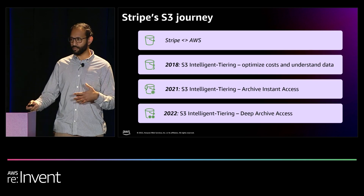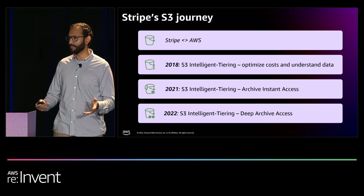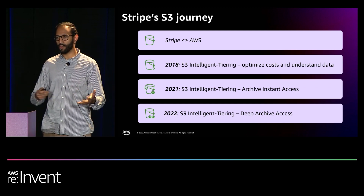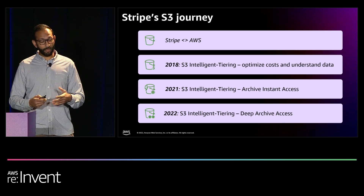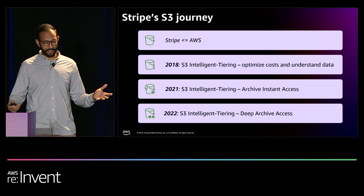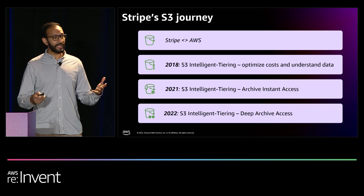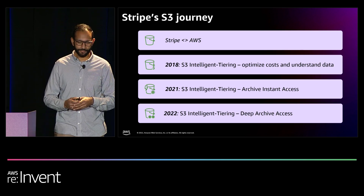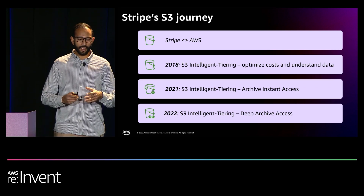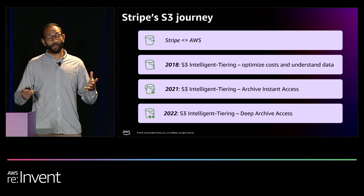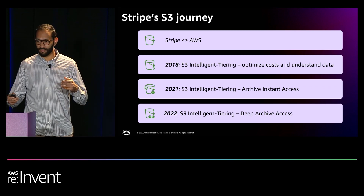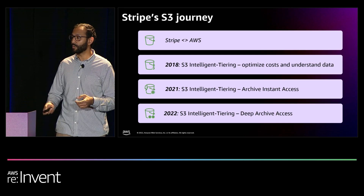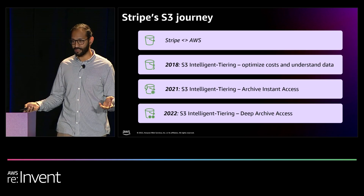We could save a lot of money still using intelligent tiering with no change in code and no worries about throughput. So we moved over 90% of our data into intelligent tiering at 30% of the cost. But at hundreds of petabytes of data, that wasn't enough for us. So earlier this year, we began experimenting with deep archive access.